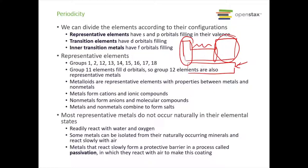We have metalloids that are also part of the representative elements, and these have properties between metals and nonmetals. Metals form cations and ionic compounds; nonmetals can form anions and can form ionic compounds as well as molecular compounds. Most representative metals do not occur naturally in their elemental state because they readily react with water and oxygen, forming compounds very easily. They can be isolated from minerals, and they slowly react with air — forming a protective barrier in a process called passivation.